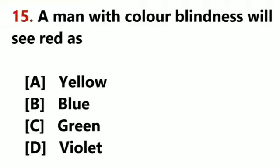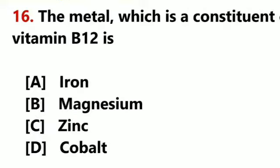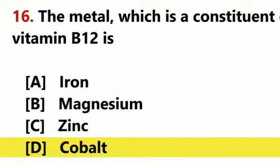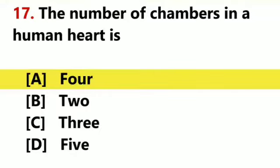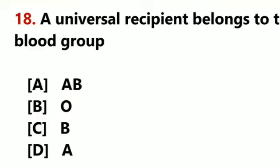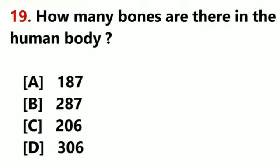A man with color blindness will see red as green. The metal which is constituent of vitamin B12 is Cobalt. The number of chambers in a human heart is 4. A universal recipient belongs to the blood group AB. How many bones are there in a human body? 206.